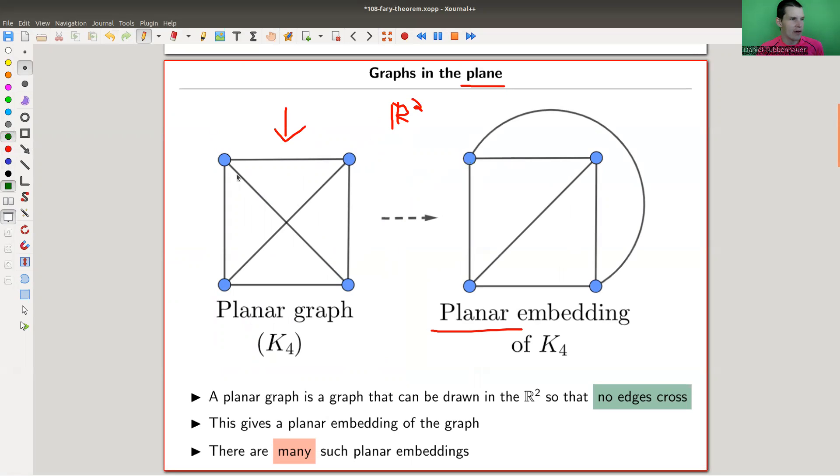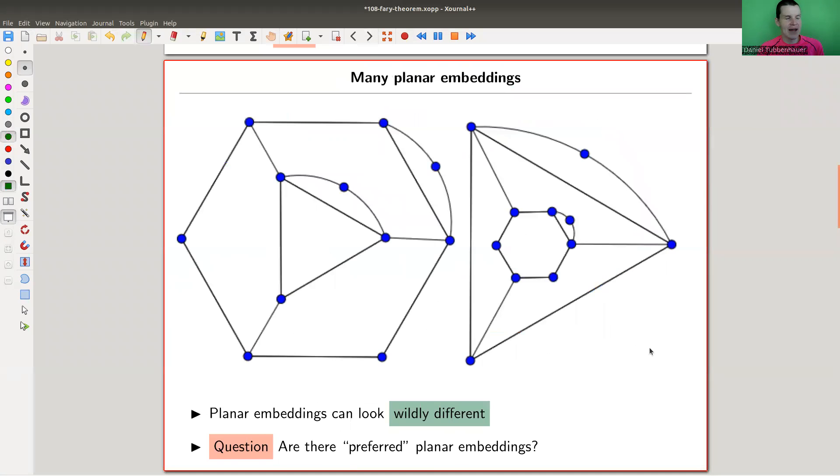Similarly, here for this graph where this edge here in the middle, we just draw it on the outside in a little bit of a curvy fashion. And that's what we want to do. We are kind of looking for different realizations of a graph. And let's say it is planar. Some graphs are really not planar. We don't care about those. But let's say it is planar. And kind of there are many of these and we kind of would like to have a preferred one in some sense. And that's what this theorem is all about.